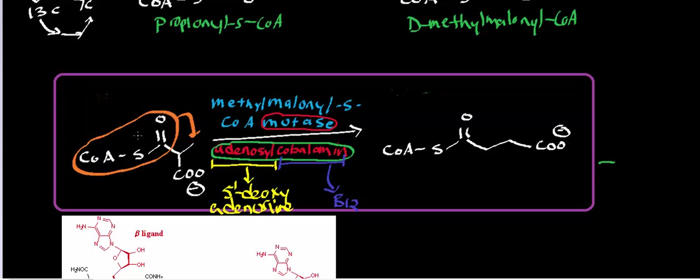So anytime you hear the name cobalamin, you should immediately think of B12. And it turns out that B12, or in this case adenosylcobalamin, is going to be used to effectively move this group that I've circled in orange, this thioester-CoA, ultimately onto this carbon right here. And what you see is that that gives us this molecule, which is succinyl-CoA. And the name mutase in the name sort of implies that it's taking some group and moving it to another part of the molecule. That's what a mutase does.